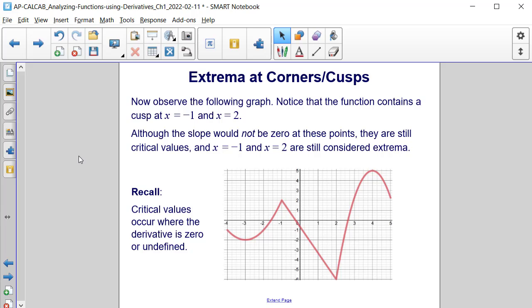Now observe the following graph. Notice that the function contains a cusp at x equals negative 1 and another at x equals 2. Although the slope would not be 0 at these points, they are still critical values, and x equals negative 1 and x equals 2 are still considered extrema.